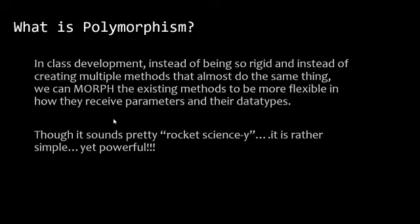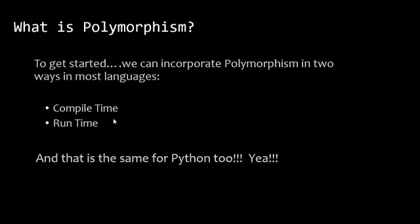Though it sounds complicated, it is rather simple, yet actually very powerful. We can incorporate polymorphism in two ways in most languages — compile time and runtime — and that is the same for Python. There are two types of polymorphism: compile time and runtime. We'll talk about those from a VB perspective and then finally from a Python perspective.